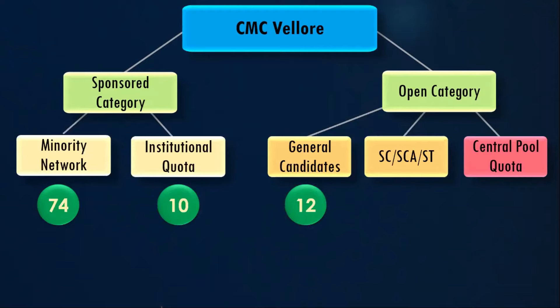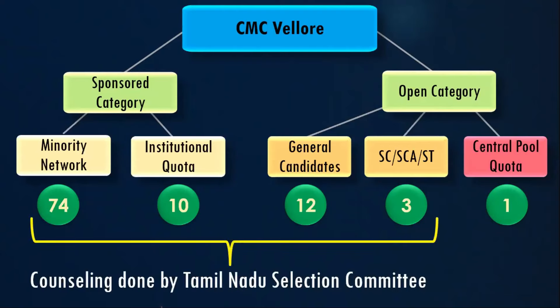For general candidates there are 12 seats reserved — it will be very competitive. SC/ST candidates have 3 seats reserved. For the central pool scheme administered by the central government of India, there is 1 seat surrendered by CMC Vellore. The total seats is 100. Excluding the central pool scheme, the 99 seats admission is done by the Tamil Nadu selection committee.